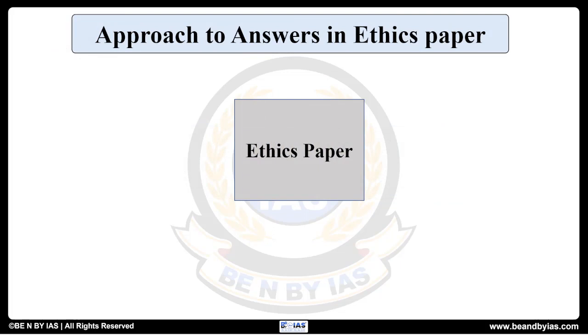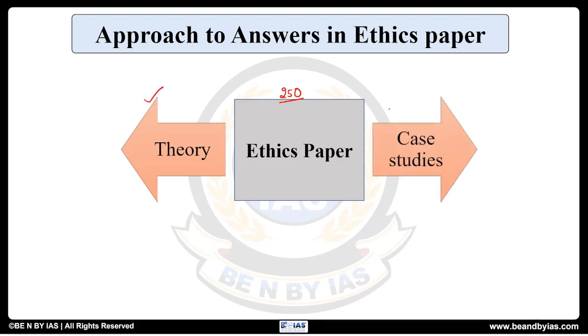GS paper 4 is the ethics paper. Generally, it is like other general studies papers. It is also composed of 250 marks in which we have two parts. Part A is related to the theory part, and part B is related to case studies.